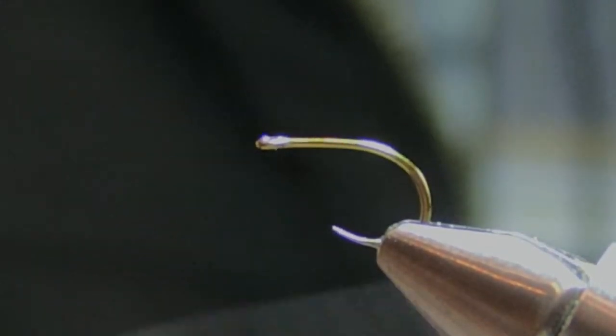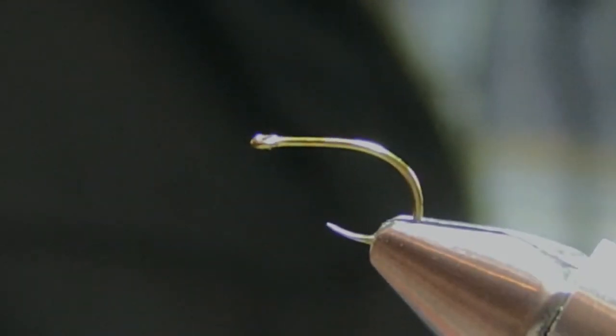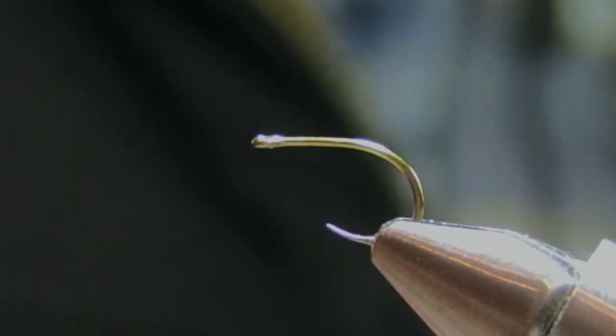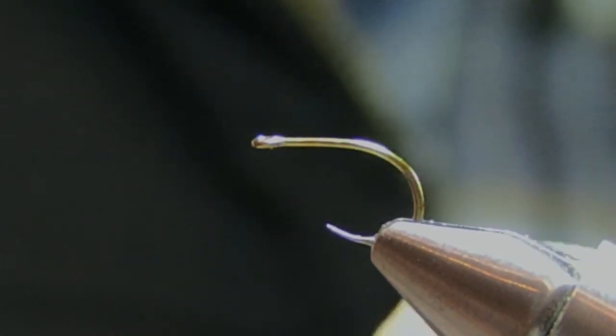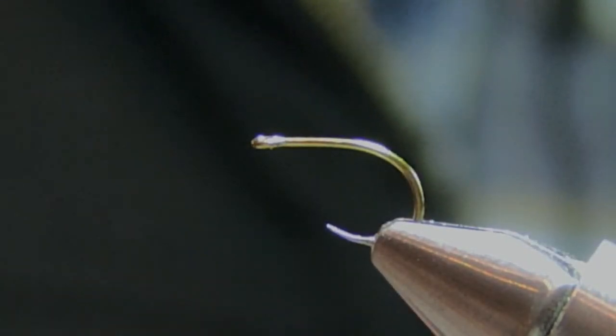Okay, so what we're tying today is the Antron Caddis. This is a fly that we've really picked up through a lot of our international competition fishing. It's a very robust fly and again it's easy to tie and you can catch multiple fish on the same fly. So it really ticks off a lot of boxes from being a very functional fly.